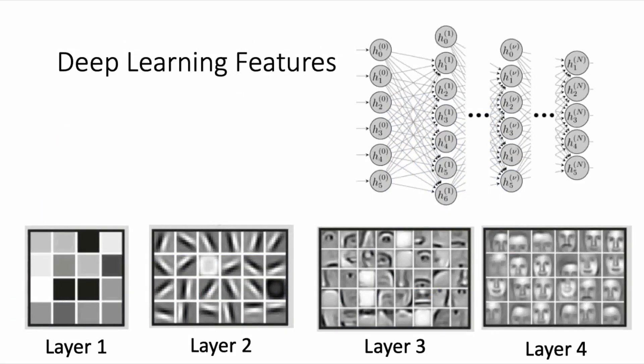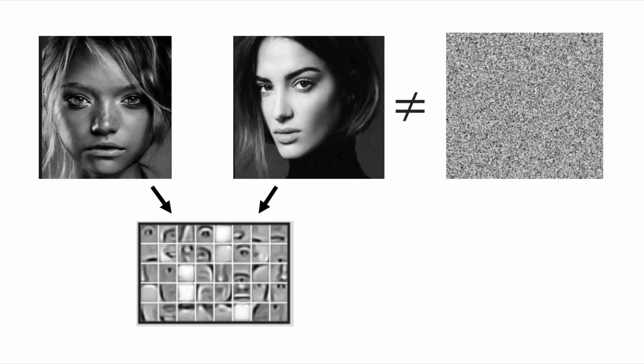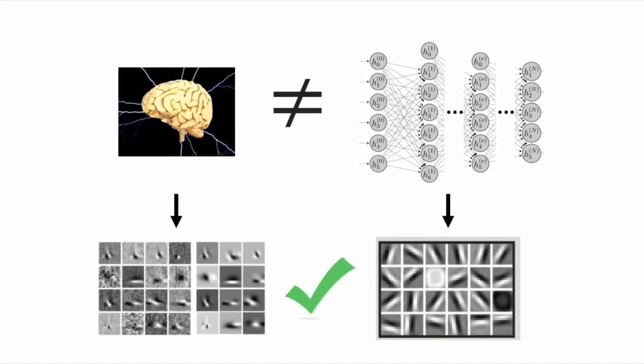Artificial neural networks will learn to detect features that are most relevant for finding solutions for problems we care about, such as discerning faces, and not problems we don't care about, such as discerning white noise. This is analogous to the workings of our biological neural networks.